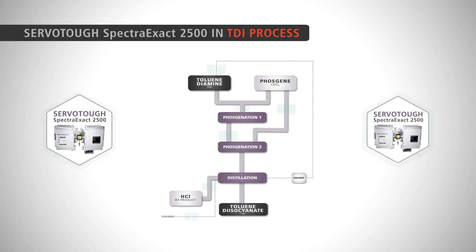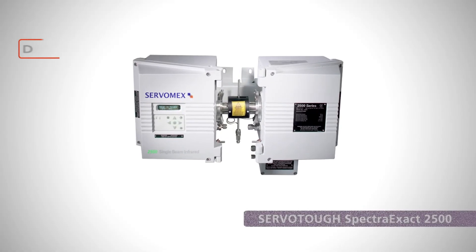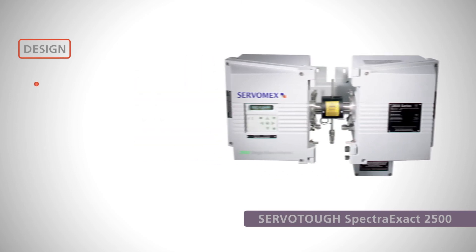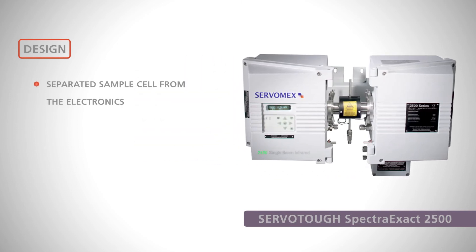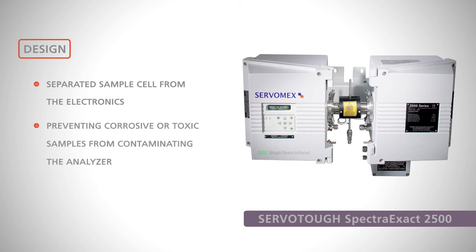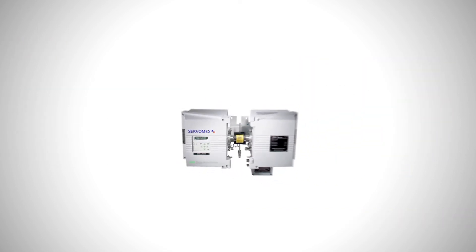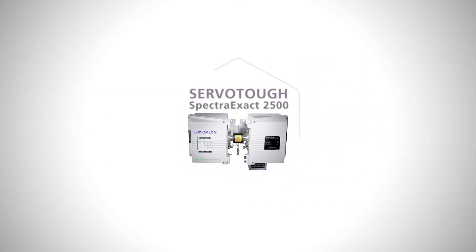The purified TDI product is finally ready, with the Spectra Exact 2500 performing a final task of measuring phosgene emissions in the stack. The design of the Spectra Exact 2500 separates the sample cell from the electronics, preventing corrosive or toxic samples from contaminating the analyzer.